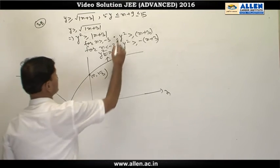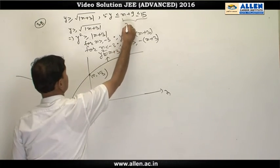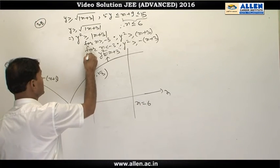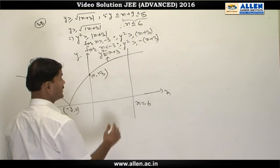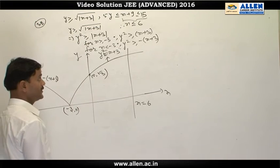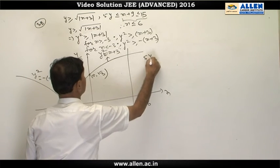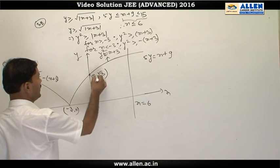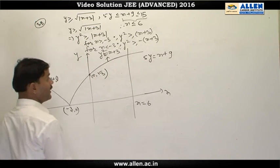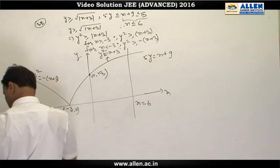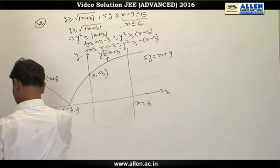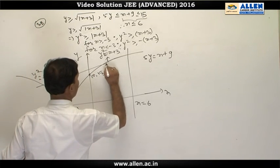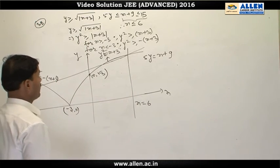From the inequality x + 9 ≤ 15, we get x ≤ 6, so we draw a vertical line x = 6, and the region is to its left. We also draw the line 5y = x + 9; setting x = 0 gives y-intercept 9/5, which lies above (0, √3).